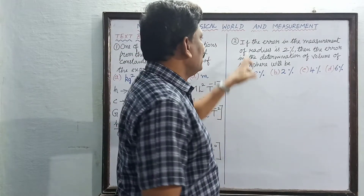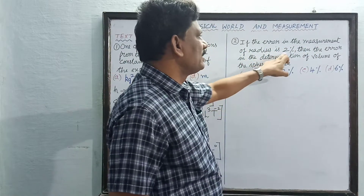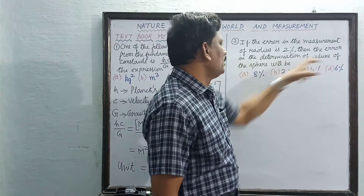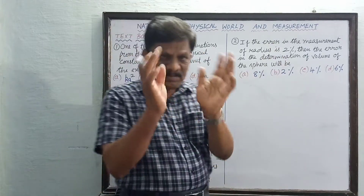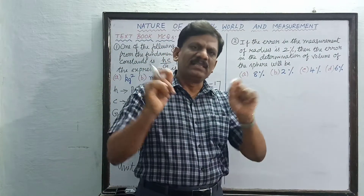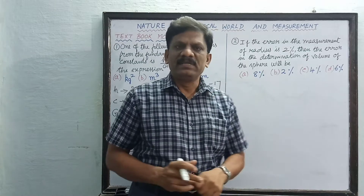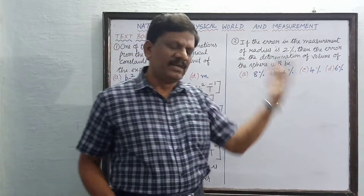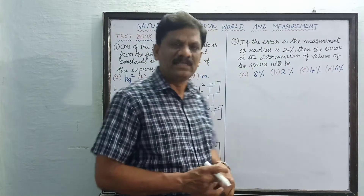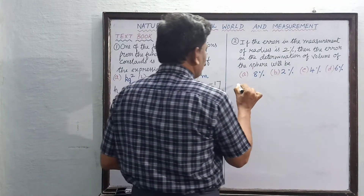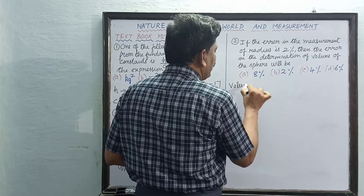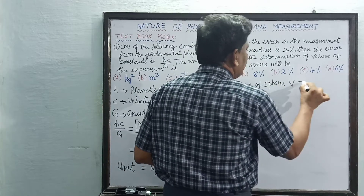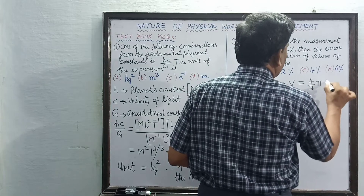The second question: if the error in the measurement of the radius is 2 percent, find the error in the determination of the volume of the sphere. A sphere has radius R; you measure the radius with some instrument and commit an error of 2 percent, so the volume will also have an error. The volume of a sphere is V = 4/3 π R³.